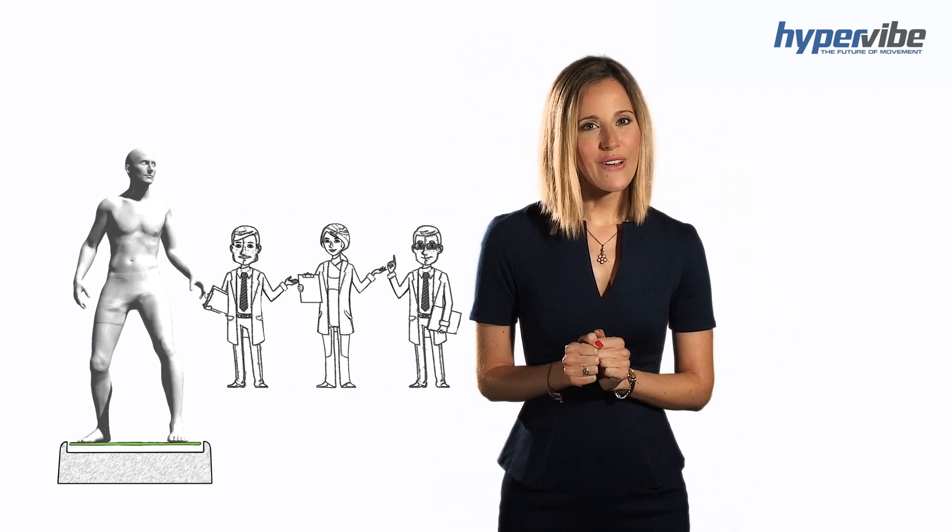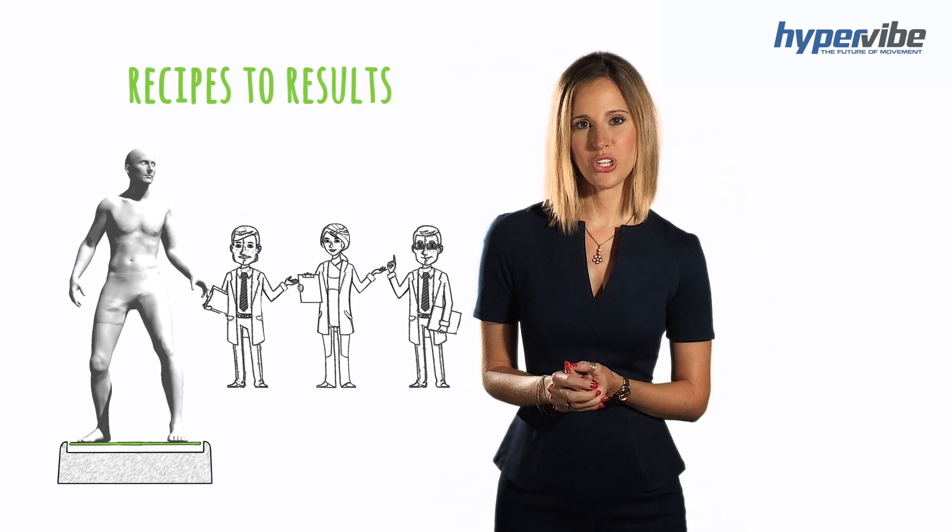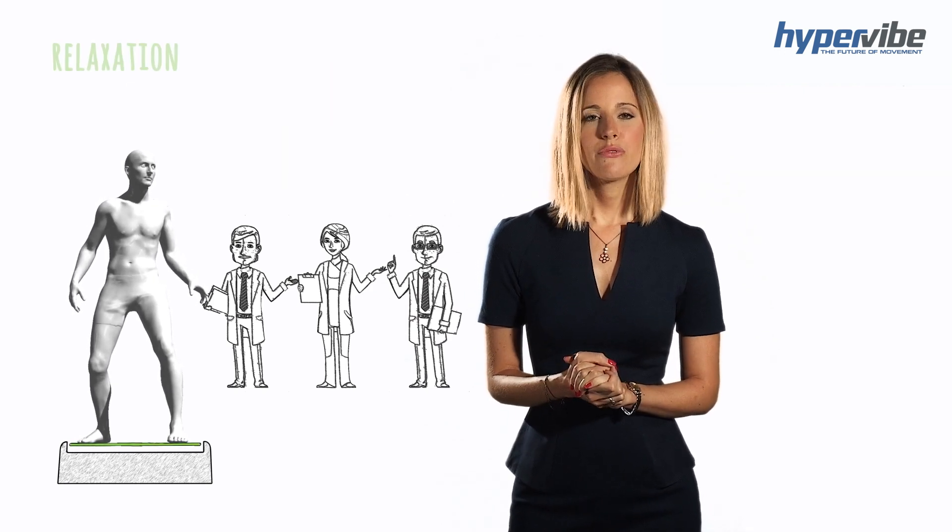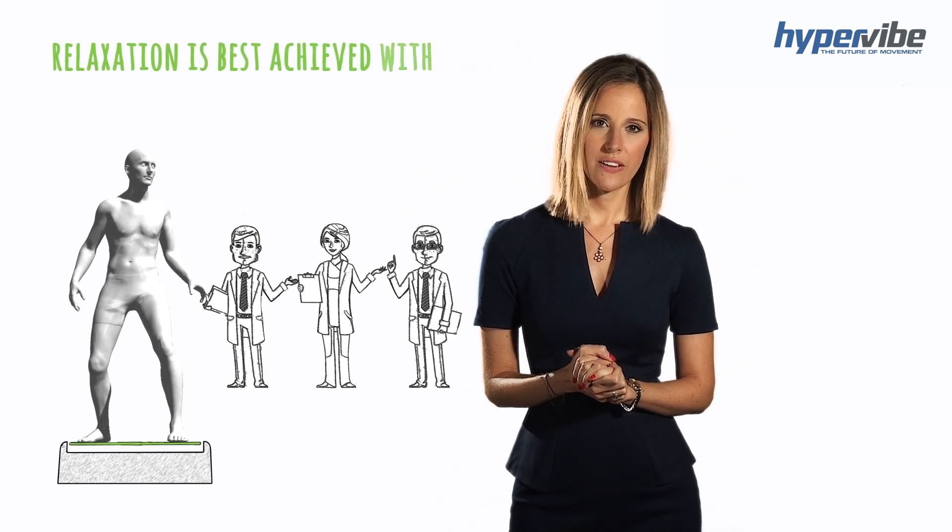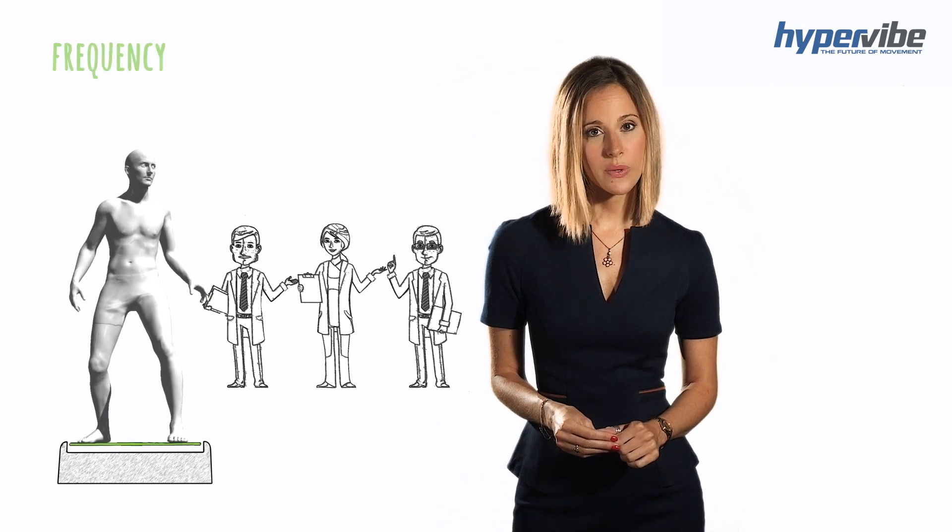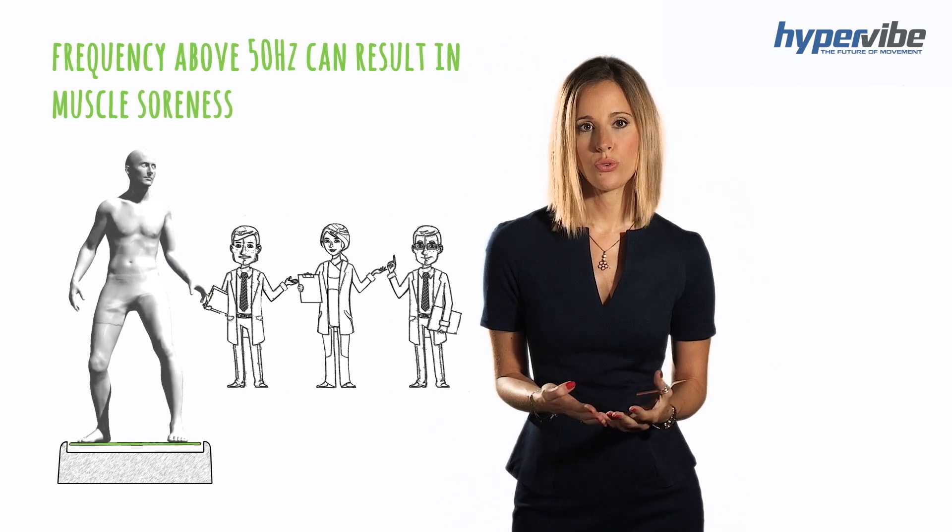Scientists have also found that there are certain recipes to results on a vibration machine. For example, in one study, scientists noted that relaxation is best achieved with frequency less than 20 Hz, and use of frequency above 50 Hz will create muscle soreness.